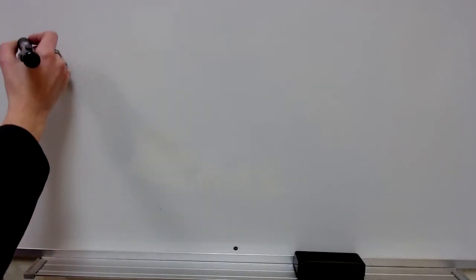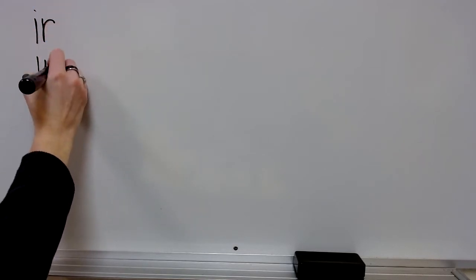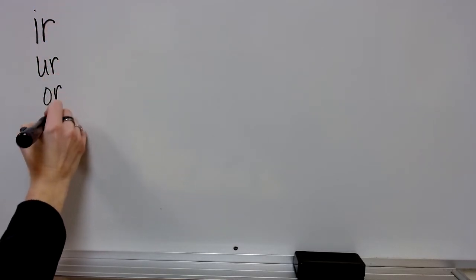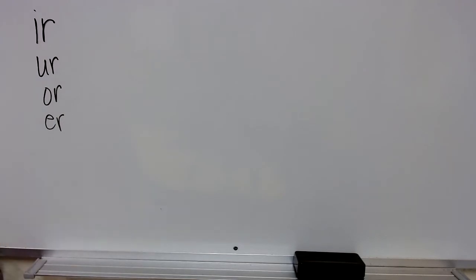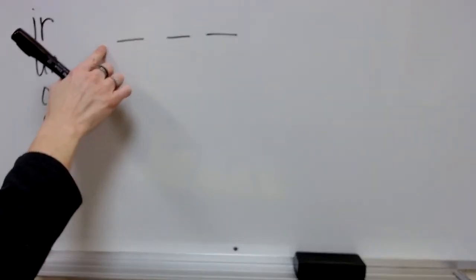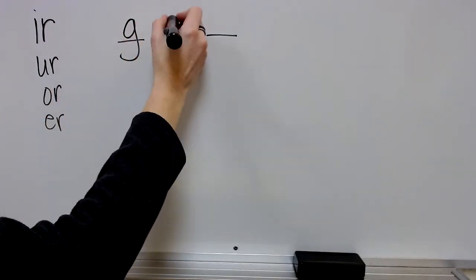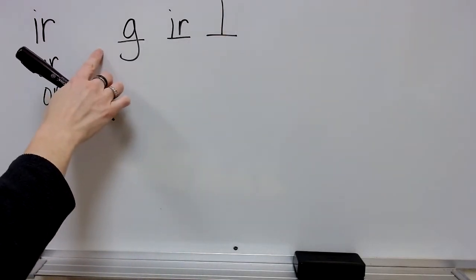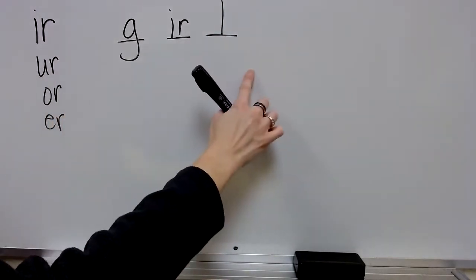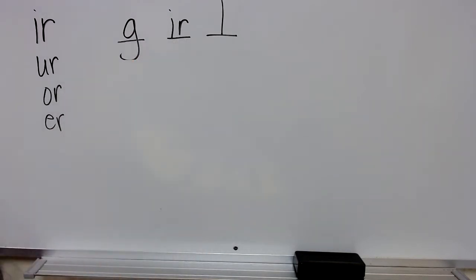For the words we're practicing today, they might have the ur sound spelled I-R, U-R, O-R, or E-R. You'll have to write it out to see which one looks right. Your first word is girl. What word? Stretch: girl. Write the spelling for girl. Check it. Spell girl. Yes, a girl.